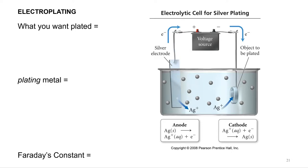So one way to make gold and silver jewelry more cheaply is to use electroplating.